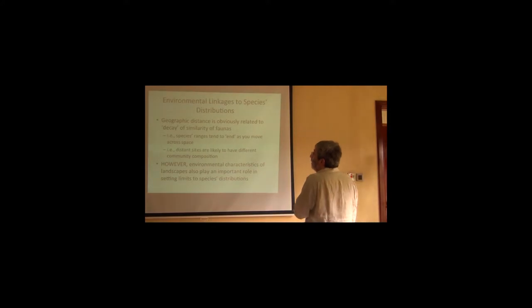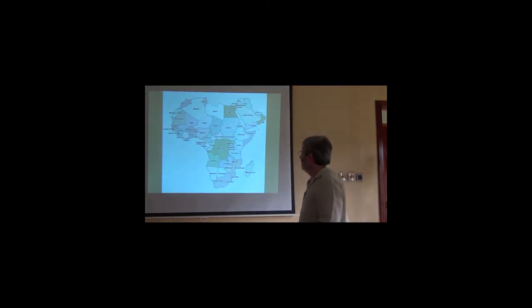So, without a doubt, geographic distance is related to change in faunas. And Arturo will be talking about that later in the week. Which is to say, if you move that direction of the set of species that's right here, they're going to start to drop out. Okay? And so, if we see a huge gap in the middle of our map, and maybe there's no sampling in all that space, we know that faunas and floras will change. Okay? That's obvious.